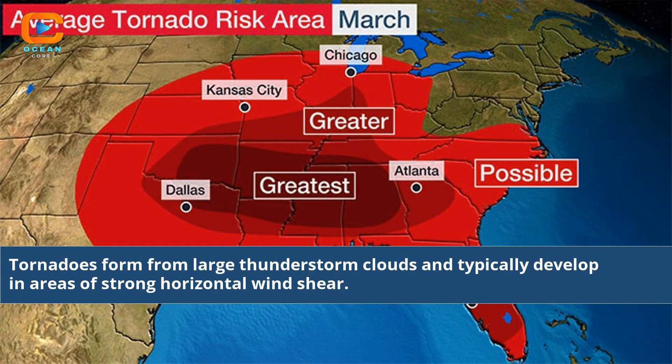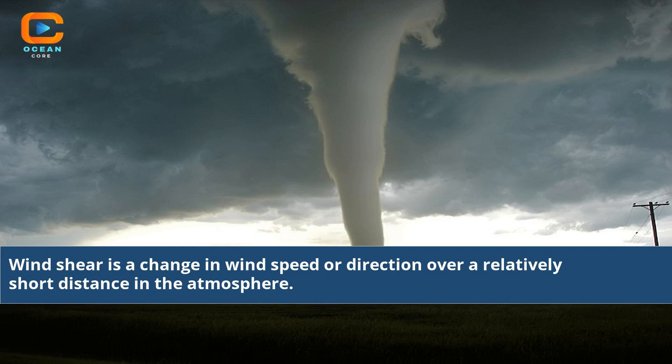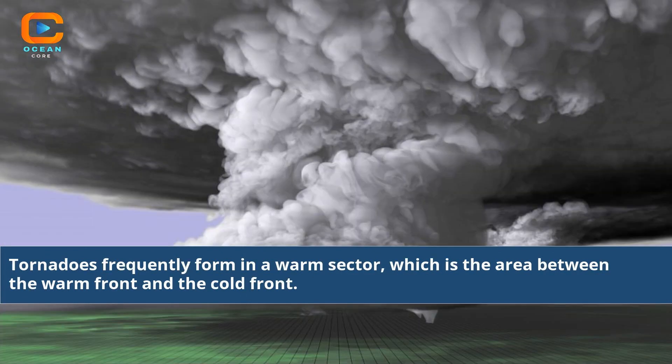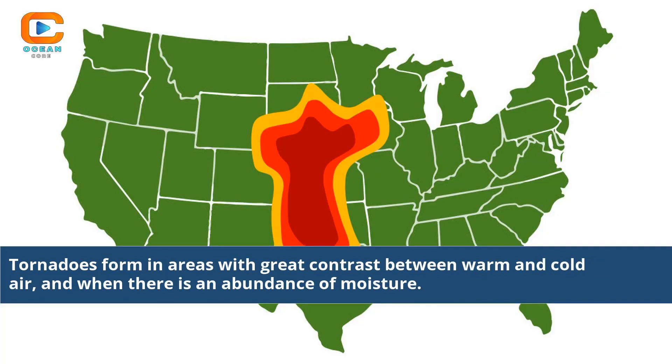Tornadoes form from large thunderstorm clouds and typically develop in areas of strong horizontal wind shear. Wind shear is a change in wind speed or direction over a relatively short distance in the atmosphere. Tornadoes frequently form in a warm sector, which is the area between the warm front and the cold front, in areas with great contrast between warm and cold air and when there is an abundance of moisture.